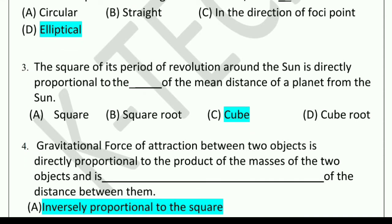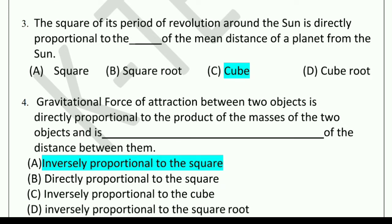Third question: The square of its period of revolution around the sun is directly proportional to the dash of the mean distance of a planet from the sun. Options are: square, square root, cube, or cube root. The correct answer is cube. So, the square of its period of revolution is directly proportional to the cube of the mean distance of a planet from the sun.